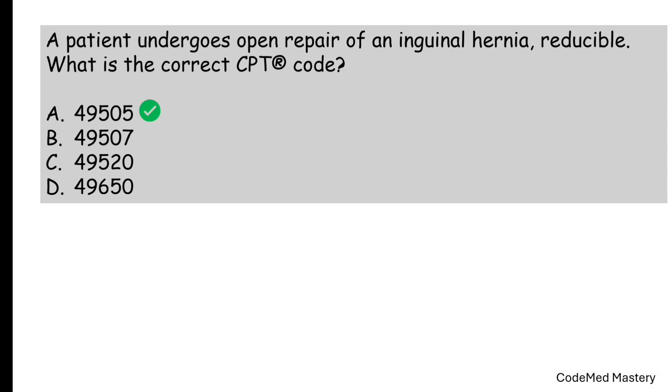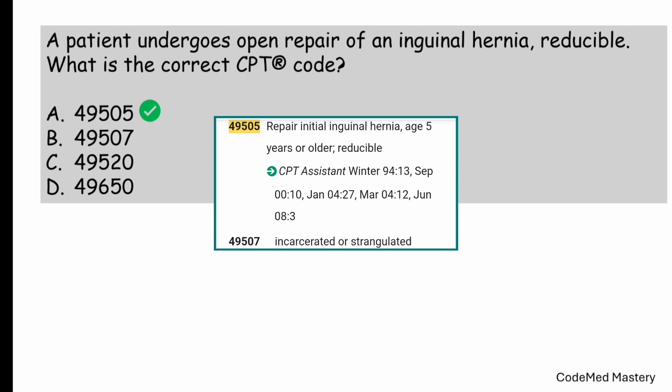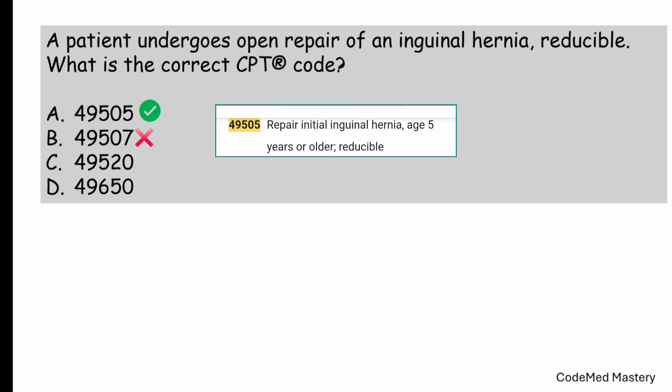The right answer for this question is option A, 49505. Let's see how. Read the question: a patient undergoes open repair of an inguinal hernia, reducible. What is the correct CPT code? Check the code 49505 — it is for repair, initial inguinal hernia, age 5 years or older, reducible. Since the question specifies reducible, we can eliminate option B.